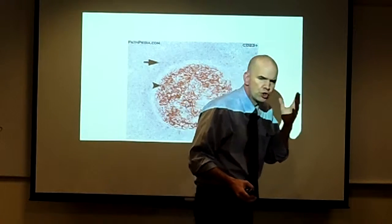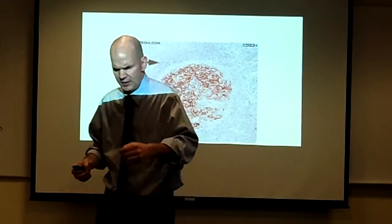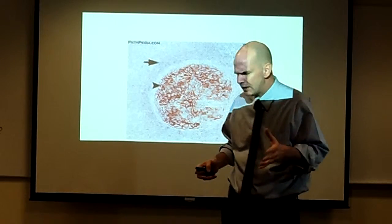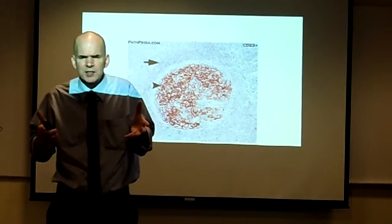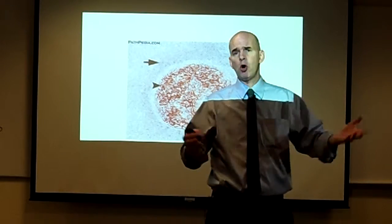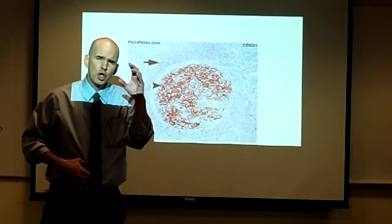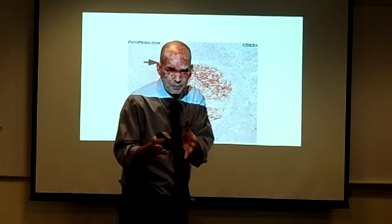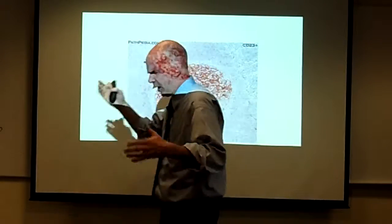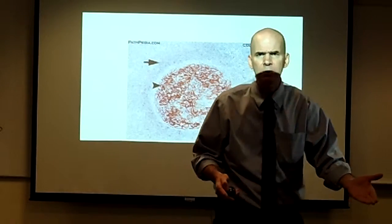The reason that the germinal center B cell dies is because for all it's gained with its CD10 and BCL6, it's given up something very important. It's given up BCL2. And BCL2 is a lot like self-confidence. It's what allows a normal, naive B cell to go on surviving without external survival signals from the cells around it. Germinal center B cells having given up BCL2 are exquisitely sensitive to apoptosis. Without constant externally derived validation and reassurance, they die. They become apoptotic.